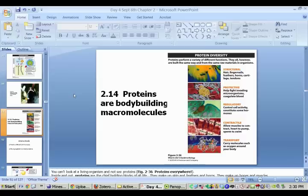Proteins are structural like your hair and your fingernails, in other animals feathers, horns, cartilage, tendons. It's also protective—it helps to coagulate your blood, fight off microorganisms inside of your blood. It's regulatory, meaning it controls your cell activity and constitutes some hormones. It's contractile, so it allows your muscles to contract, your heart to pump. If you produce sperm, it allows those sperm to swim, and it also takes part in transportation, carrying molecules such as oxygen around your body.